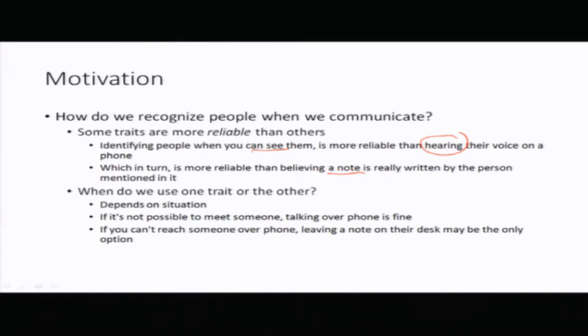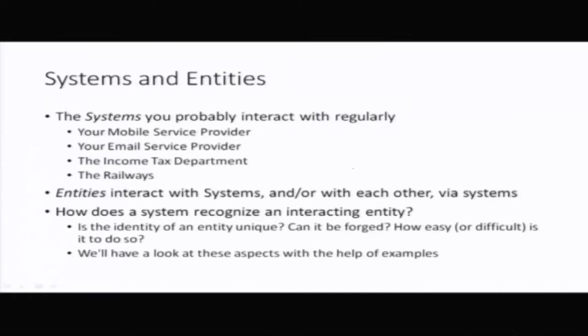Which trait we use depends on the situation. We may be able to see people, listen to them, or sometimes just leaving a note is fine. Now we will see how human beings interact with systems — until now we were talking about two human beings, one trying to identify the other. In this lecture we will see how systems interact with entities and identify human beings. Before going ahead, we should define what a system is and what entities are.